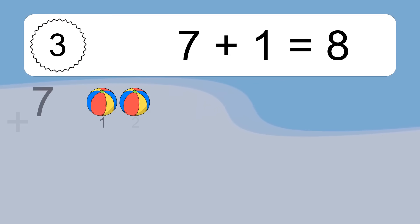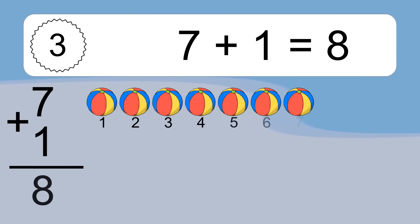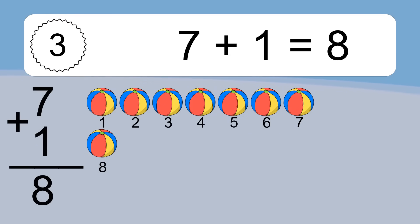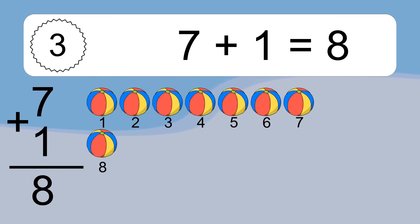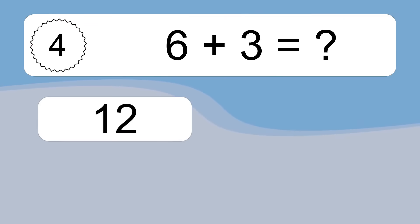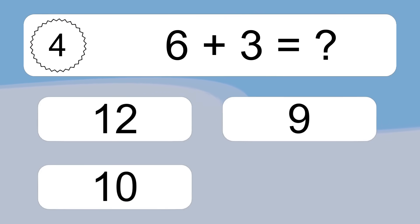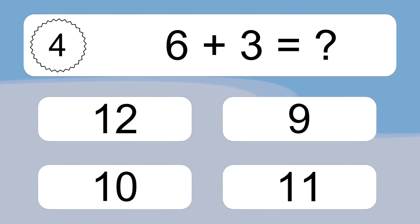7 plus 1 equals what? 7 plus 1 equals 8. Let's count it: 1, 2, 3, 4, 5, 6, 7, 8.